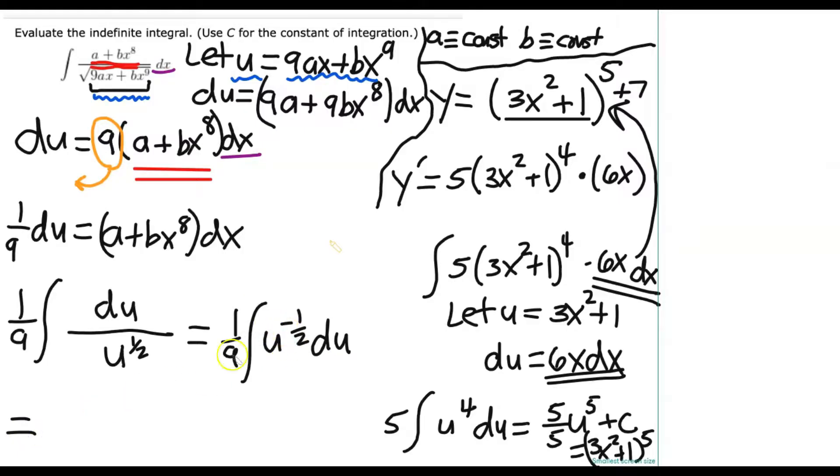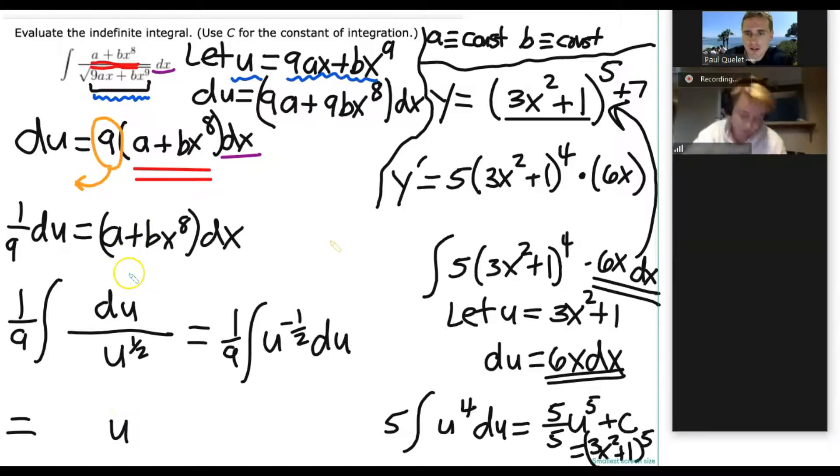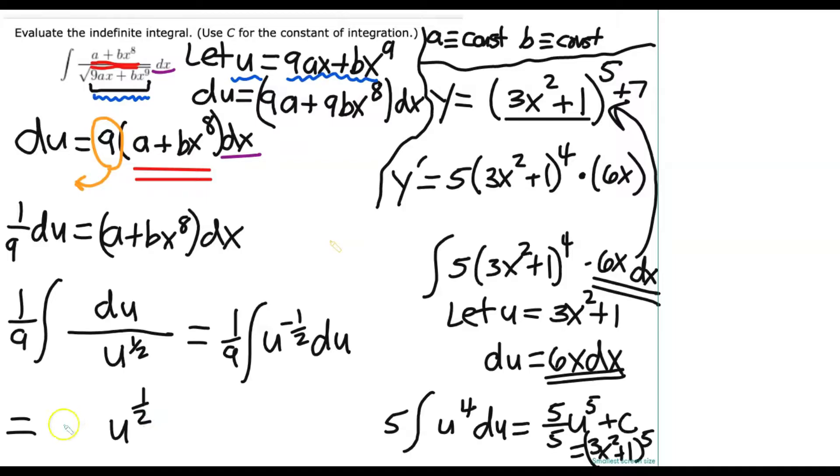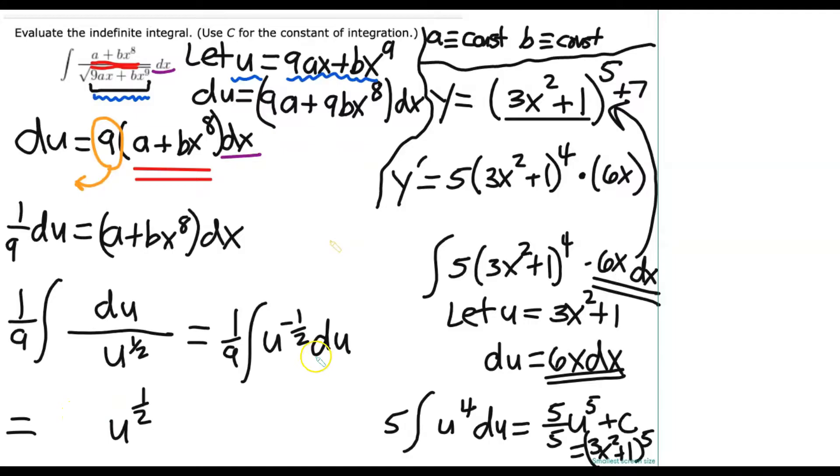So we've got 1 over 9, antiderivative of u to the one half du, which I think we can handle that one. So let's give it a try. What are we going to get when we take that antiderivative? I have u to the negative three halves. Well, close. That would be if we took the derivative. So we're going to go the other way. To the one half. Well, so here's the deal. The du basically goes away. Because remember, think of du as the width of your rectangles. That comes along for the ride. But as soon as you perform the integration step, it's gone.